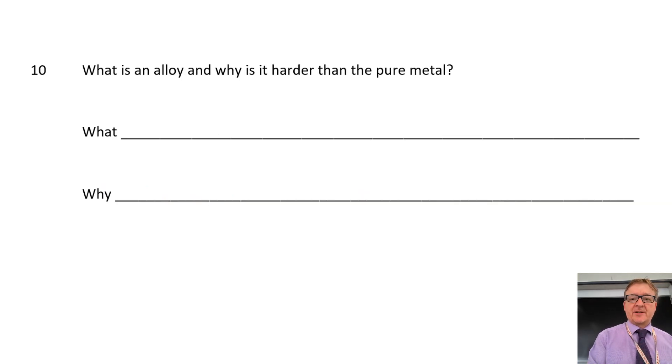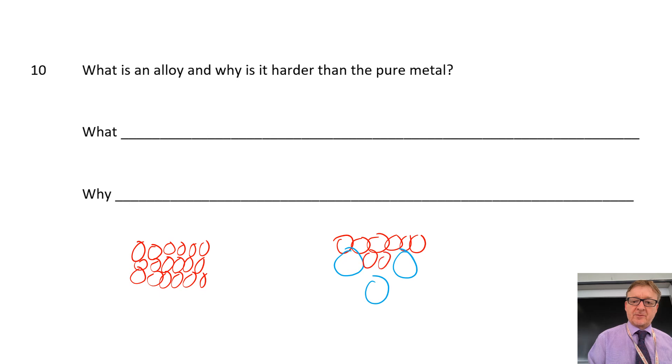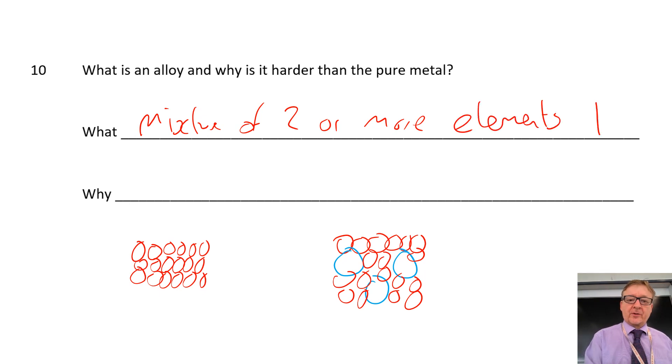So what is an alloy, and why is it harder than a pure metal? So what I'm just going to do is I'm just going to draw a pure metal there. Very badly drawn, but the principle is there. And then what I'm going to do over here is I'm going to draw an alloy. And then I'm going to draw my metal ones in between. So what is an alloy? An alloy is a mixture of two or more elements, but one must be a metal.